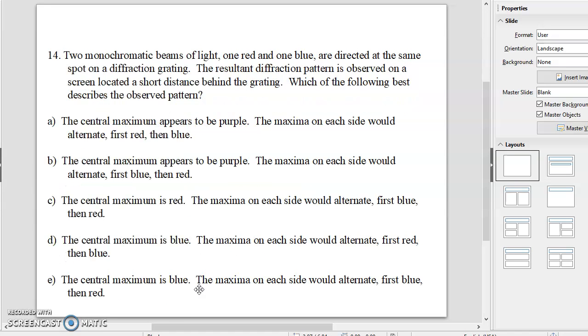Fourteen. Not quite so good. Two monochromatic beams of light, one red and one blue, are directed at the same spot on the diffraction grating. The resultant diffraction pattern is observed on a screen located a short distance behind the grating. Which of the following best describes the observed pattern? And the answer is B, the central maxima appears to be purple. The maxima on each side would alternate first blue and then red. So the central is purple. That's going to be the mixture. And then you have the alternating ones.